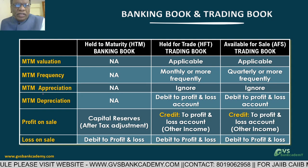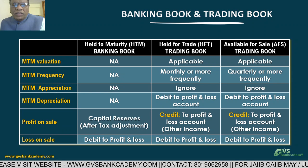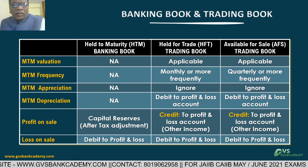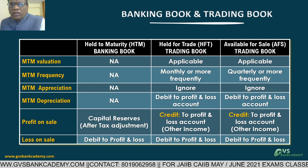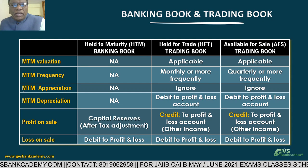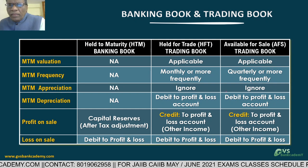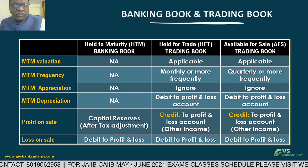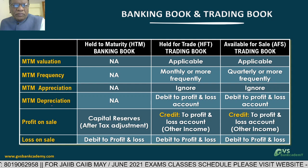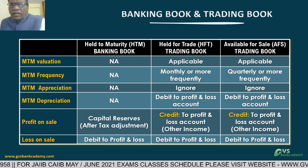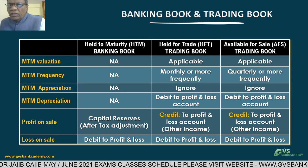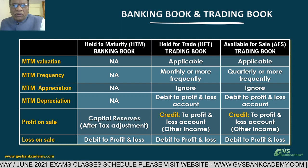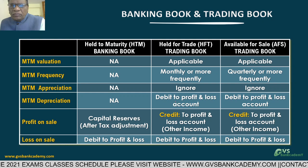Regarding MTM appreciation - any gain in mark-to-market value under both Held for Trading and Available for Sale buckets is simply ignored. Regarding MTM depreciation - a revaluation loss under Held for Trading must be debited to the Profit and Loss account. Similarly, under Available for Sale, MTM depreciation is also debited to the P&L account. So MTM appreciation is ignored for both categories, while MTM depreciation loss is debited to P&L.